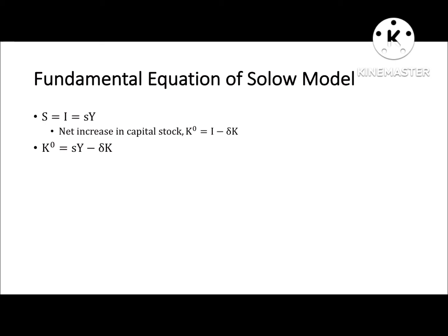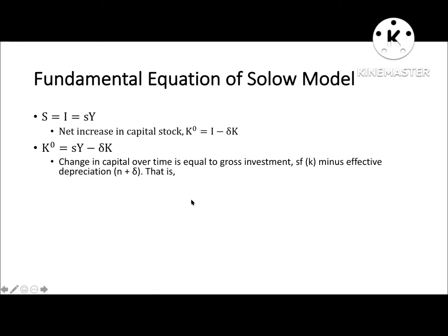We can say that K-dot is equal to sY minus delta K. But the change in capital over time is equal to gross investment, sf(K), minus effective depreciation, (n plus delta)K. The change in capital over the period of time equals gross investment minus effective depreciation.